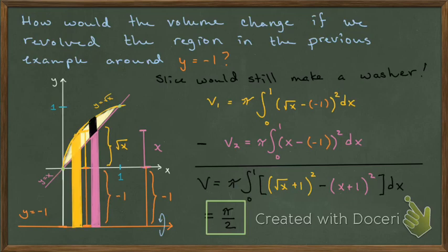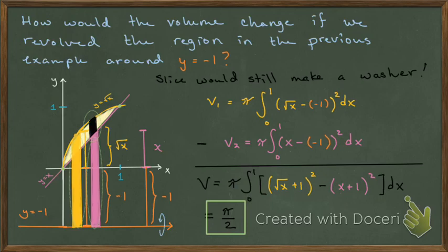My advice is: take the region you're given, think about the axis you're revolving it around, and ask what shape the rotated slice gives you. Do you get a disk or a washer? That should indicate which method to use. If it's a washer, treat it like two separate larger disks. That's it for the disk and washer method. Please practice more examples — next we'll look at a slightly different technique for handling similar situations. Thanks for watching.